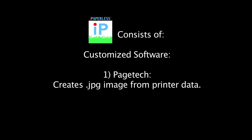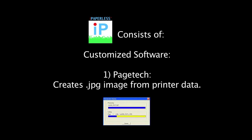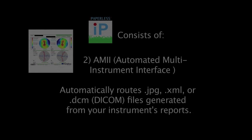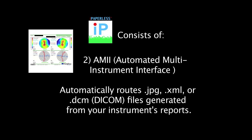iPaperless consists of four types of customized software. Number one is Pagetech. Pagetech is used to create JPEG images from printer data. Number two is AIME — an automated multi-instrument interface. AIME automatically routes data from an instrument's report.